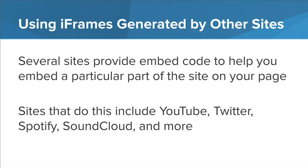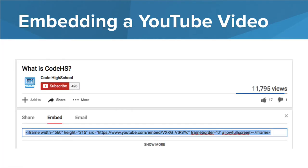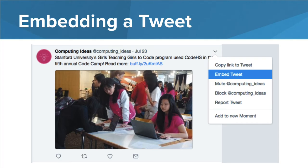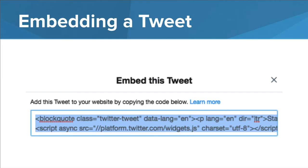Several sites provide embed code to help you embed a particular part of the site on your page. This might be a specific HTML element from that other site — maybe it's a YouTube video, Spotify playlist, SoundCloud, or even a Google Map. This is what the typical embed option looks like on a YouTube video. When you click on the Share button, you can click on the Embed tab, and it will give you the iframe code needed to embed that video on a different web page. Same thing with embedding a tweet — it doesn't use the iframe tag; it uses JavaScript to embed a widget from Twitter, so it's slightly different than the iframe tag but still functions very similarly.